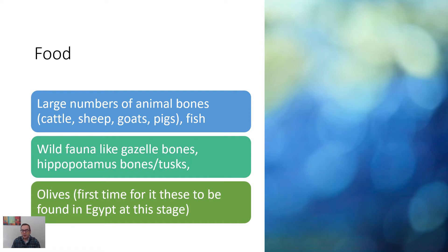Archaeologists have been working this site continuously for about 30 years. They found large numbers of animal bones, showing people were clearly eating significant amounts of meat — cattle, sheep, goats, and pigs. There are also fish bones, since the Nile is right there. People were also hunting, as evidenced by gazelle bones, hippopotamus bones, and hippo tusks. What's really remarkable is that this site contains the very first evidence of olives in ancient Egypt during the Old Kingdom period.